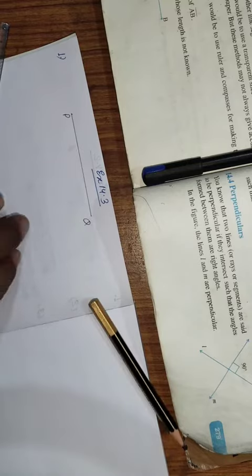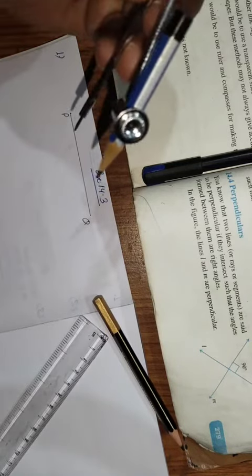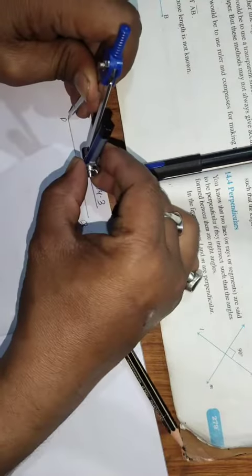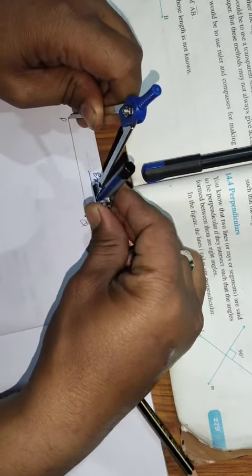Now without measuring, how you will do? So you take the compass from here, put this, take the length on the compass like this.